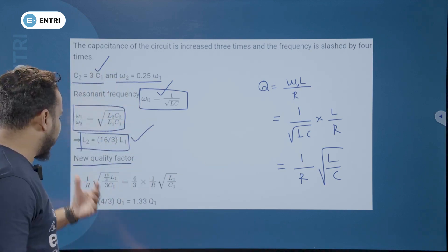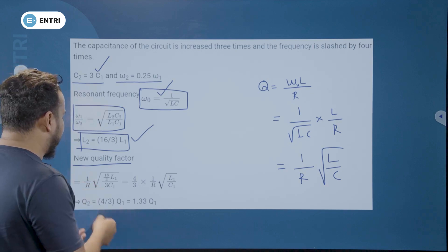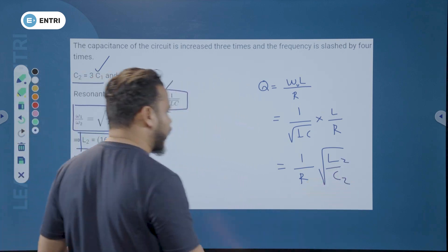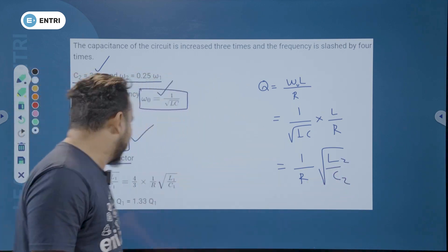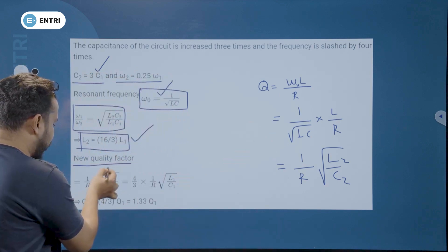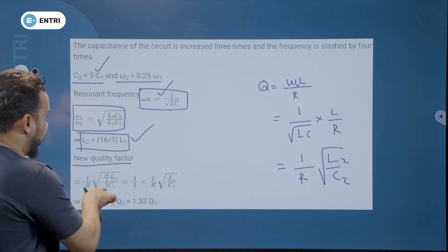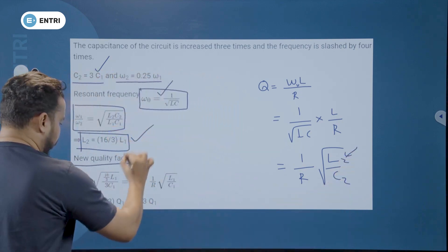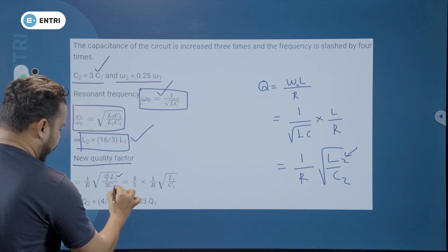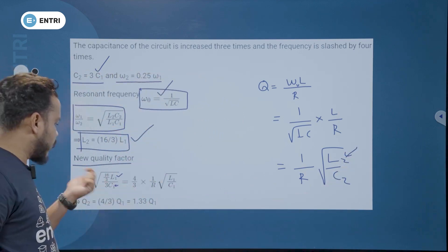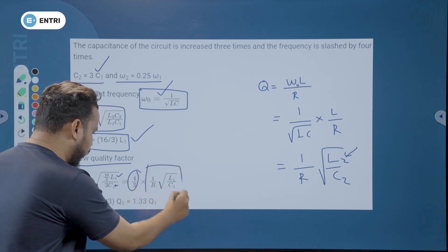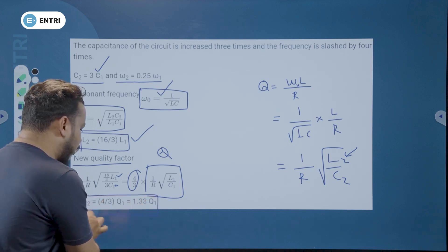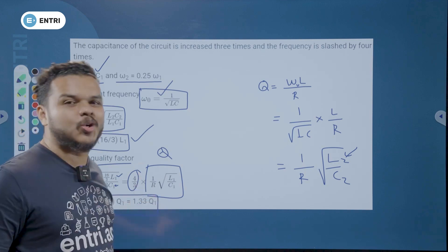The new quality factor Q2 equals 1 by R into root of L2 by C2. Substituting L2 equals 16 by 3 times L1 and C2 equals 3 times C1, you will get 4 by 3 times Q1. So the answer is 1.33 times Q1.